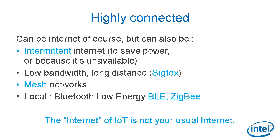Highly connected — of course it can be Internet, but it can also be an intermittent Internet to save power or because the network is unavailable. It can be long-distance networks like Sigfox. It can be mesh networks, in case you don't have a star-shaped topology. Or it can be local connections like Bluetooth Low Energy — what we call BLE or Bluetooth 4 — and Zigbee. So the Internet of Things is not your usual Internet you access from your laptop.